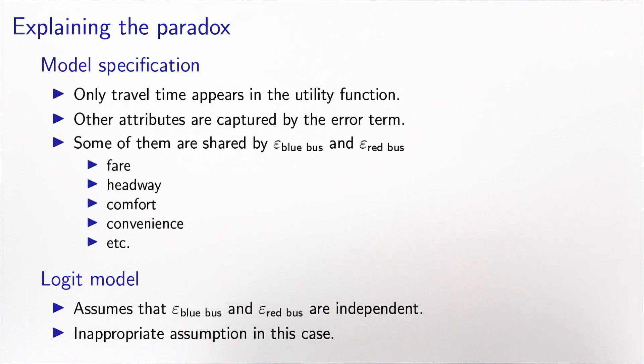And actually, some of them are associated with bus, like fare, the headway between two buses, the comfort, the convenience of taking the bus or the inconvenience, etc. And all these attributes are associated with bus, irrespectively of the color of the bus. Right? The fare will be the same, the comfort as well. All this will be common. It means that they will be both in the epsilon blue bus and in the epsilon red bus, all these unobserved attributes.